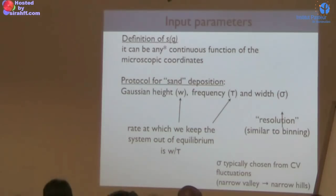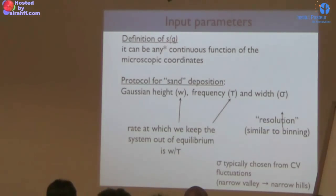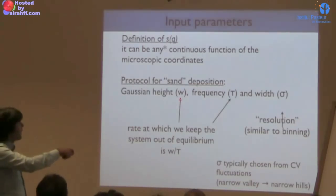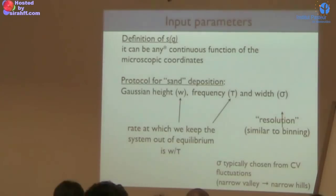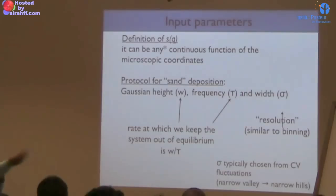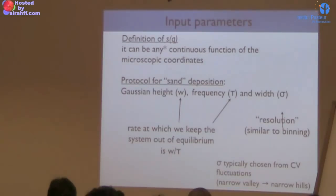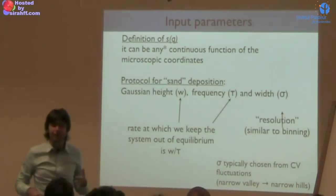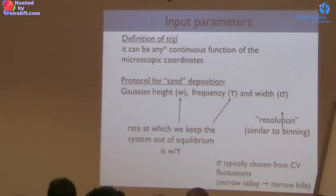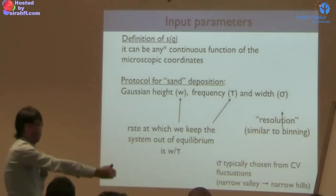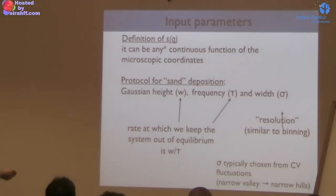In PLUMED, you choose the collective variables and the protocol for growing the potential: the height of the Gaussians and the frequency at which you add them. There was a sum over T prime — you add a new Gaussian every 100 steps or whatever. You don't do it at every step because it's too expensive. What counts is just the rate W over tau — how many kcal you add per picosecond. The bias is applied at every step in MD, but updated only every tau steps — typically 1,000 or 500 steps. The really critical quantity is W over tau.